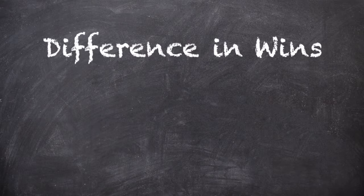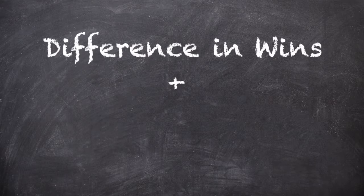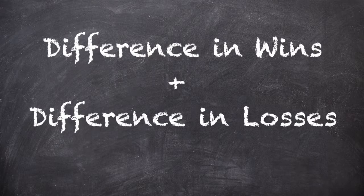The way you calculate games back is you take the difference in wins plus the difference in losses, and you divide it by two. The key with this formula is that you're always going to take the biggest number first so that you end up with a positive number at the end. So even if one team ends up with more losses than wins, you always have to take the higher of the two numbers to get the difference.